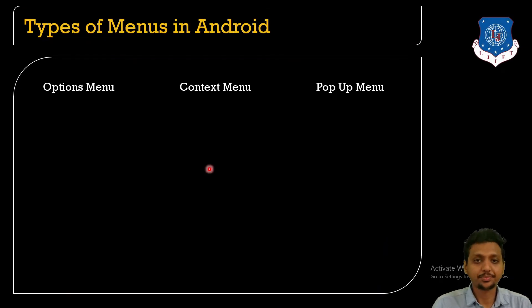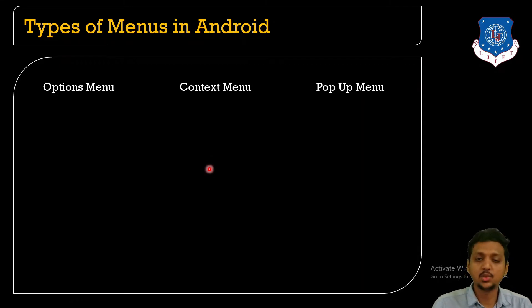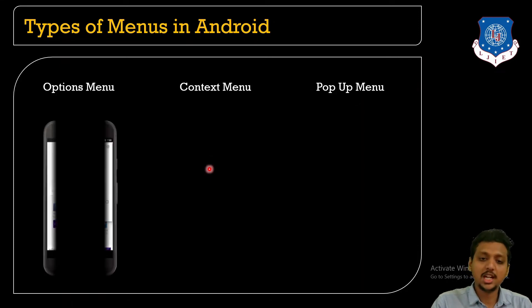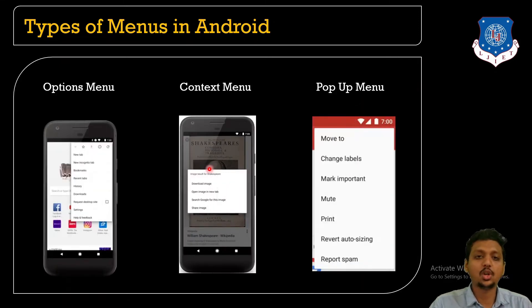There are three different types of menus: the first one is the option menu, the second one is the context menu, and the third one is the pop-up menu. Let me show you how we can differentiate all of them.